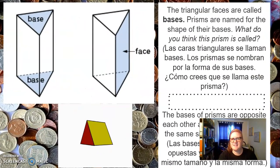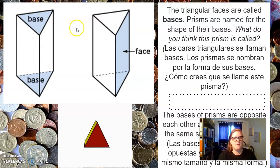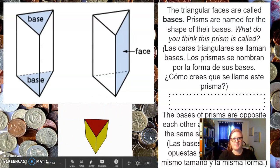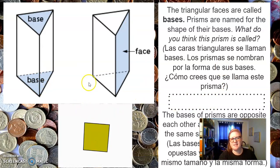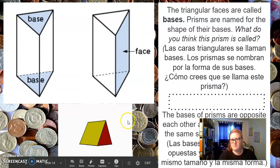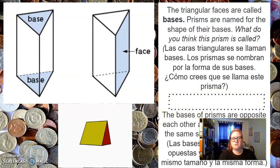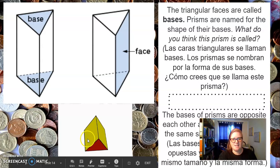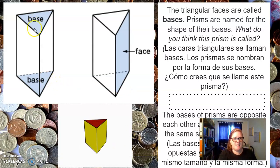The triangular faces are called bases. Prisms are named for the shape of their bases. What do you think this prism is called? You can see in this moving gif that the faces look like rectangles or parallelograms. The bases are what is shown in red. The shape of this prism is going to be named after the bases — the red part. The bases of the prisms are opposite each other and parallel. They are the same size and same shape, as you can see here.